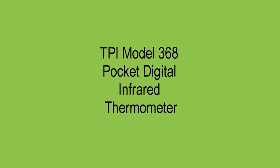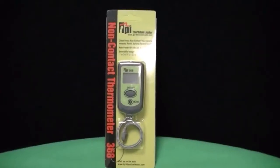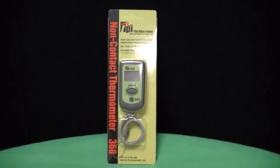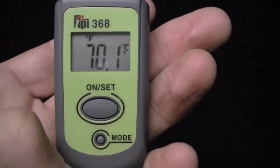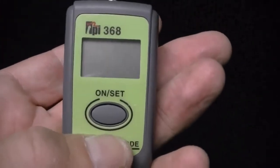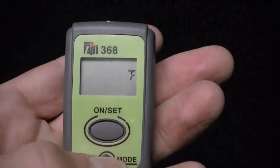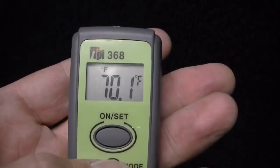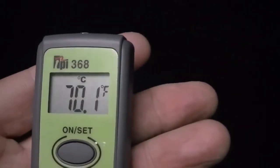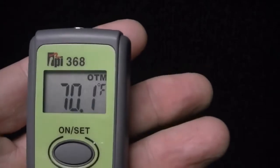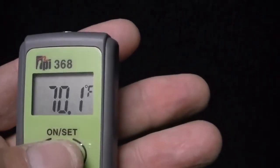The TPI model 368 is a pocket-sized, non-compact digital thermometer. It has a temperature range between negative 7 and 248 degrees Fahrenheit. The 368 is also Celsius to Fahrenheit switchable.